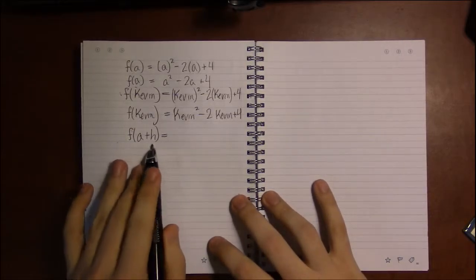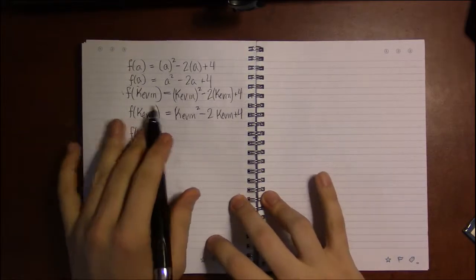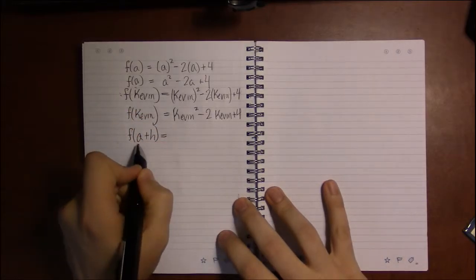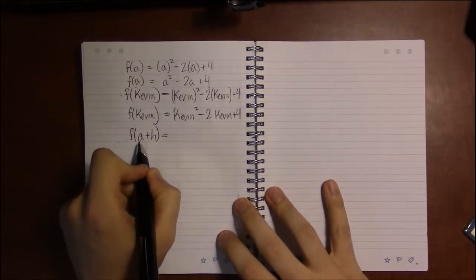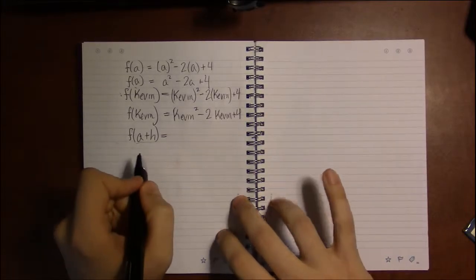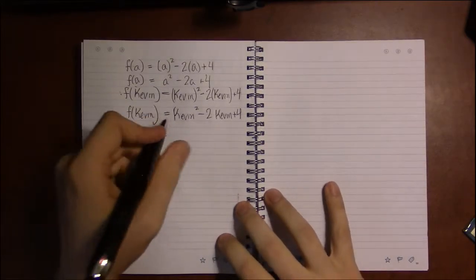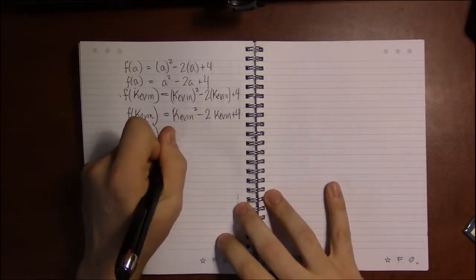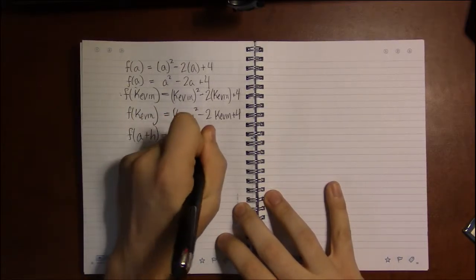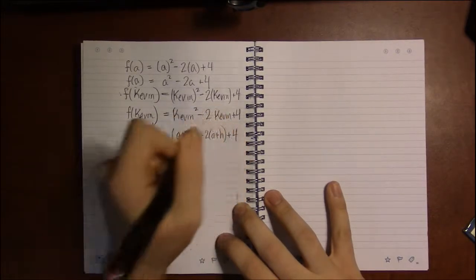So whenever you see something complicated like this, think of f(Kevin) or f(whatever), watermelon, whatever word you want. It doesn't matter. So following the rules, all I do is take a + h and replace x with a + h. So this will be (a + h)² - 2(a + h) + 4.